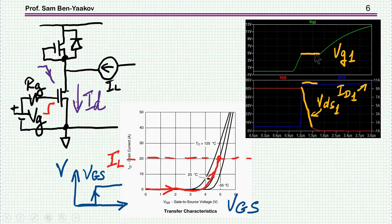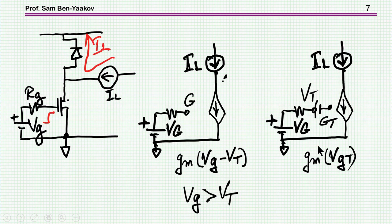We see a flat portion here — this becomes constant. The voltage is staying at this point, sort of frozen, while the voltage of the drain is dropping until it reaches just about zero, and then the process ends and we go back to charging the positive capacitance. This is the phenomenon that we see.